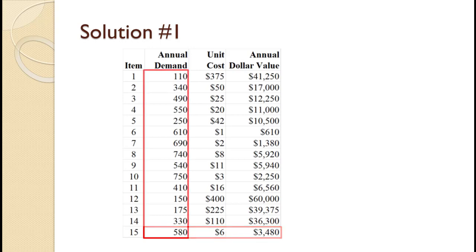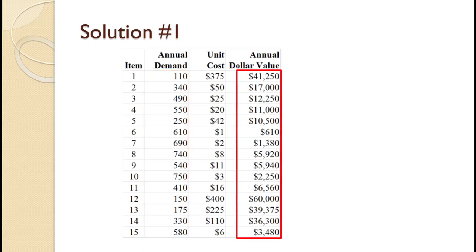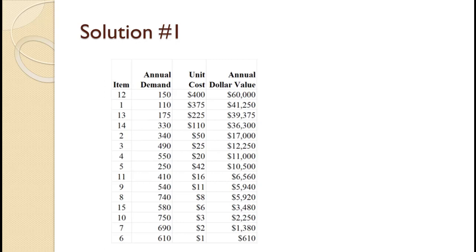While not shown on the slide, we will also need the total number of items. Those numbers total to 6,715. Likewise, the total annual dollar value is $253,815. The next step is to sort the items from largest annual dollar value to smallest dollar value. Those results are shown on the slide.